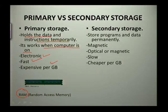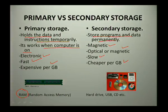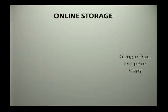Secondary storage stores programs and data permanently. It is magnetic and optical, slower, and cheaper per gigabyte. Examples of secondary storage include your hard drive, USBs, and CDs.